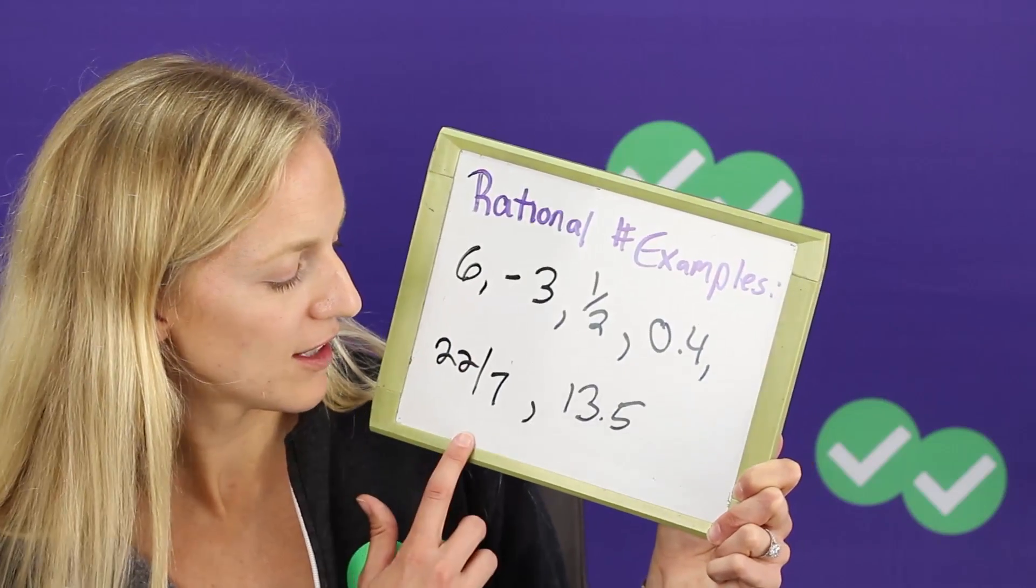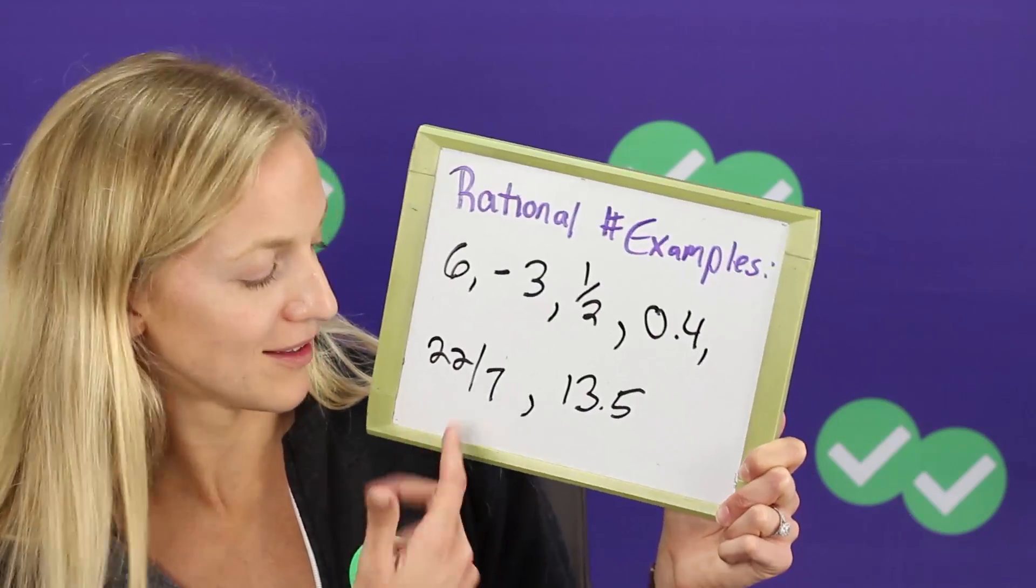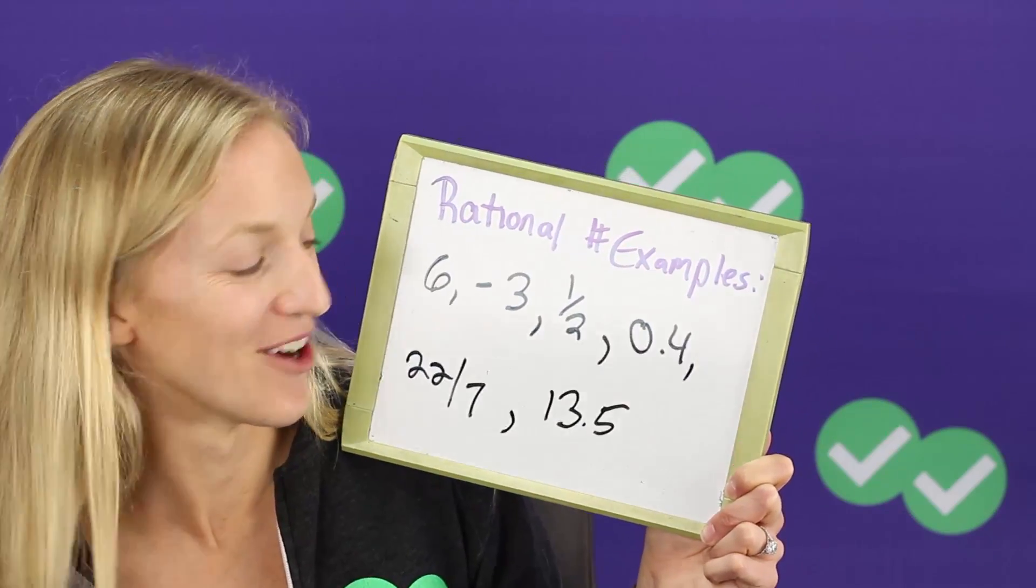22 over seven. In this case, well it's a fraction so you know it's rational.